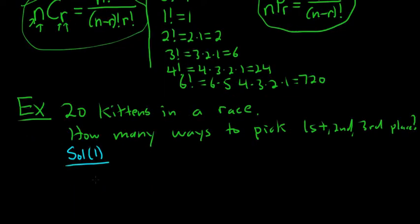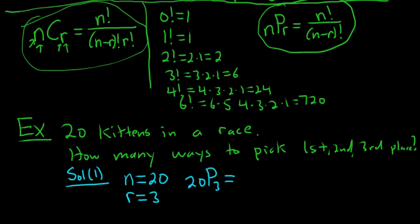Solution. So in this case, the order obviously matters because it matters who first place is, it matters who second place is, and it matters who third place is. So we have 20 kittens total, so n is equal to 20, and r is equal to 3 because we have 3 positions. So it's permutations because the order matters. So it's 20P3.